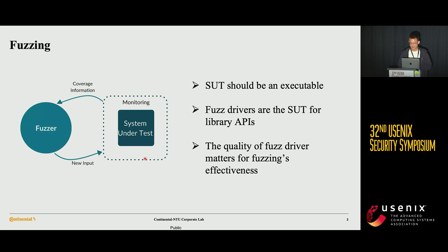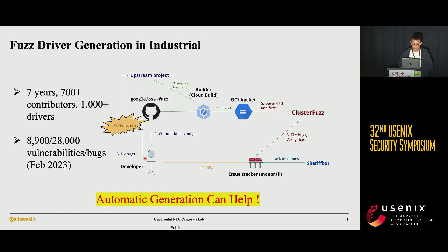Besides quality, the correctness and robustness of the fuzzing drivers significantly matters for testing quality. In industry, there are practical needs for generating fuzzing drivers. For example, Google has built and maintained a project called OSS-Fuzzing, providing a global drive service framework for fuzzing the infrastructure of modern code bases, such as libraries providing fundamental functionalities. In the past seven years, more than hundreds of contributors have been trying to create and maintain fuzz drivers for hundreds of projects. In total, they have found at least tens of thousands of bugs. Those drivers are mainly written by human experts, such as security auditors or developers, which is quite labor-intensive and time-consuming. This strongly motivates the development of automatic fuzz driver generation techniques.